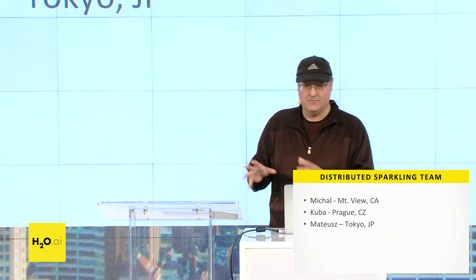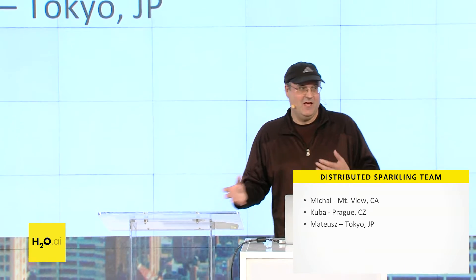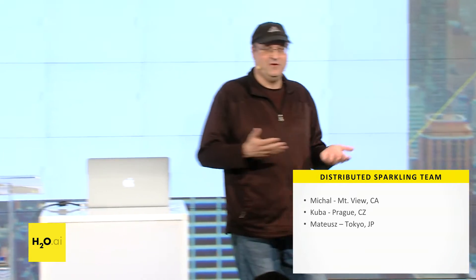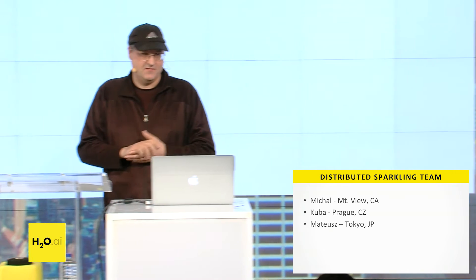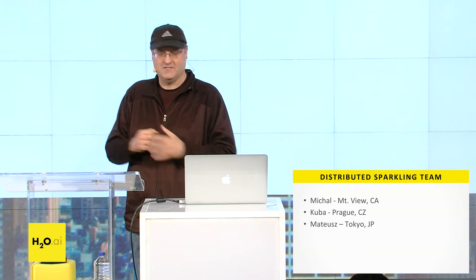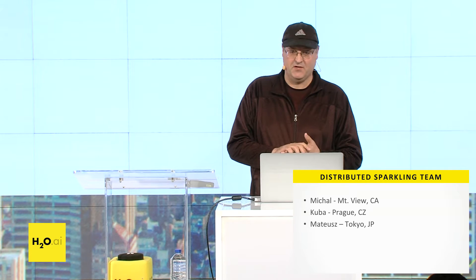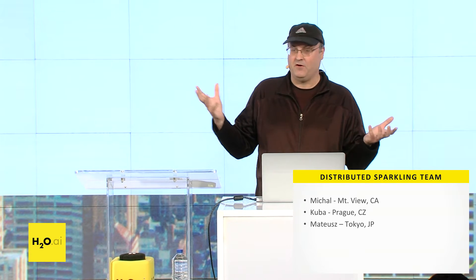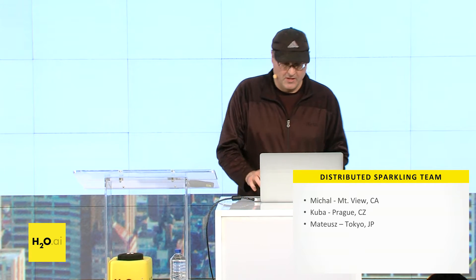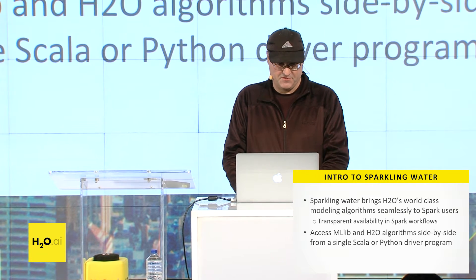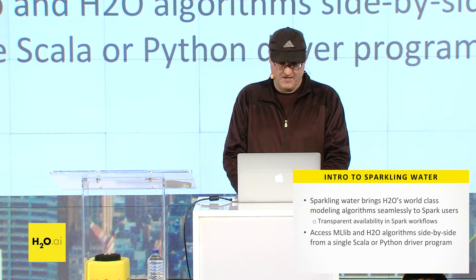Speaking of the team, this is the distributed Sparkling team. Normally you'd have McCollup here talking to you, but he's in Shanghai today, so today you get me. We also have Kuba, who's a developer in the Czech Republic, and Mateus just joined us in Tokyo. By far our most distributed team at H2O, and it's a really, really neat result that we have here to show you today.